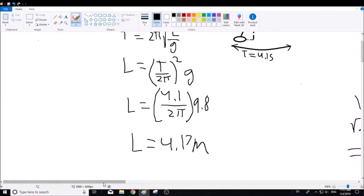The next problem, we're trying to find the maximum velocity, and we know that the maximum angle to the vertical is 3 degrees.